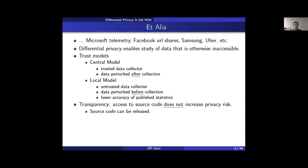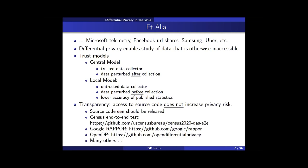In both models, differential privacy offers another benefit: everyone is allowed to know exactly how the data were perturbed. This is tremendously useful for data analysis and does not increase privacy risk at all. As a result, you should release the source code — there are many examples of source code implementations of differential privacy algorithms.